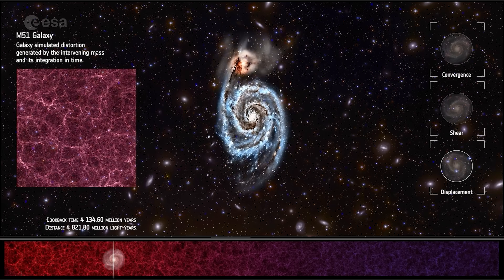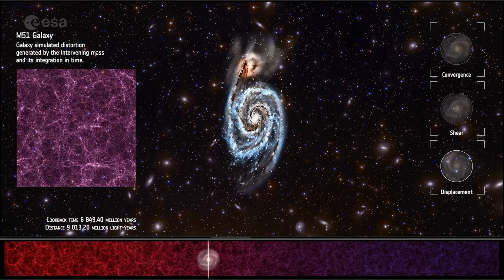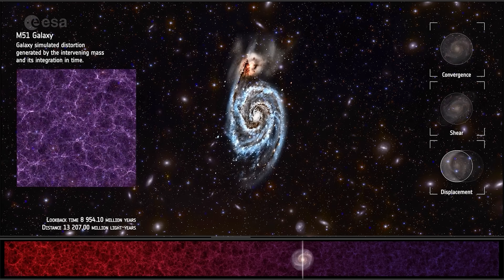By analyzing how light is bent, scientists can map where dark matter is and how much of it there is, giving us critical clues about one of the universe's biggest mysteries.